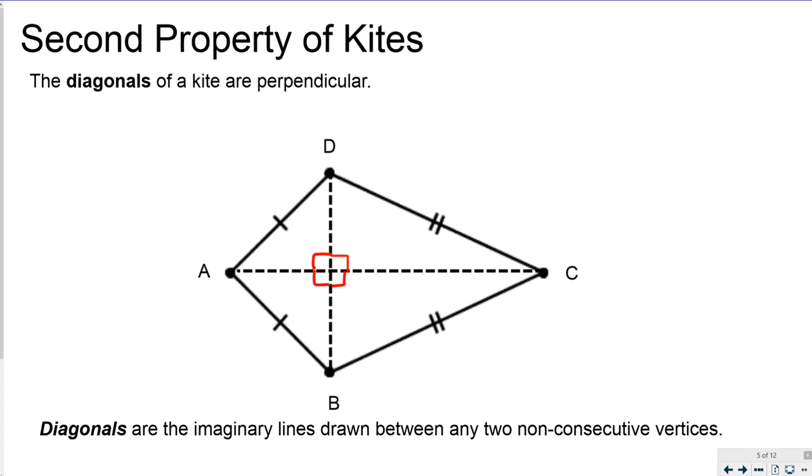As you can see they form two sets of congruent right triangles which you can use the Pythagorean theorem with in order to calculate missing measurements of the diagonals or sides that you do not know.